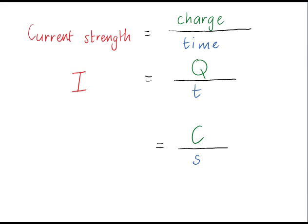So current strength is measured in coulombs per second. A short way of saying coulombs per second is amperes, or amps. We use an A.